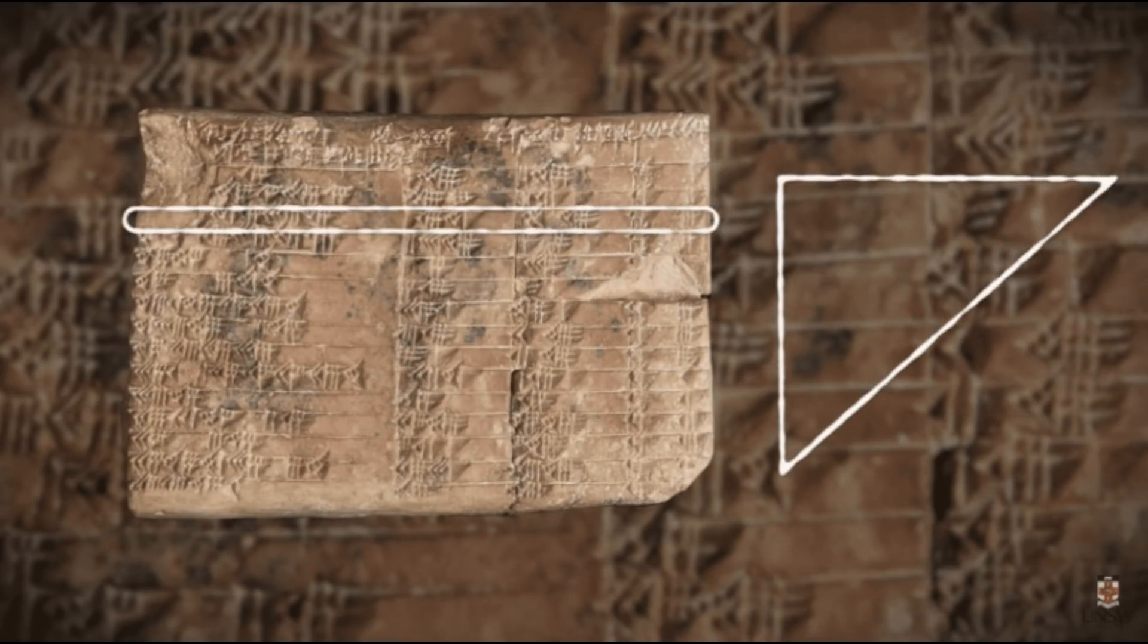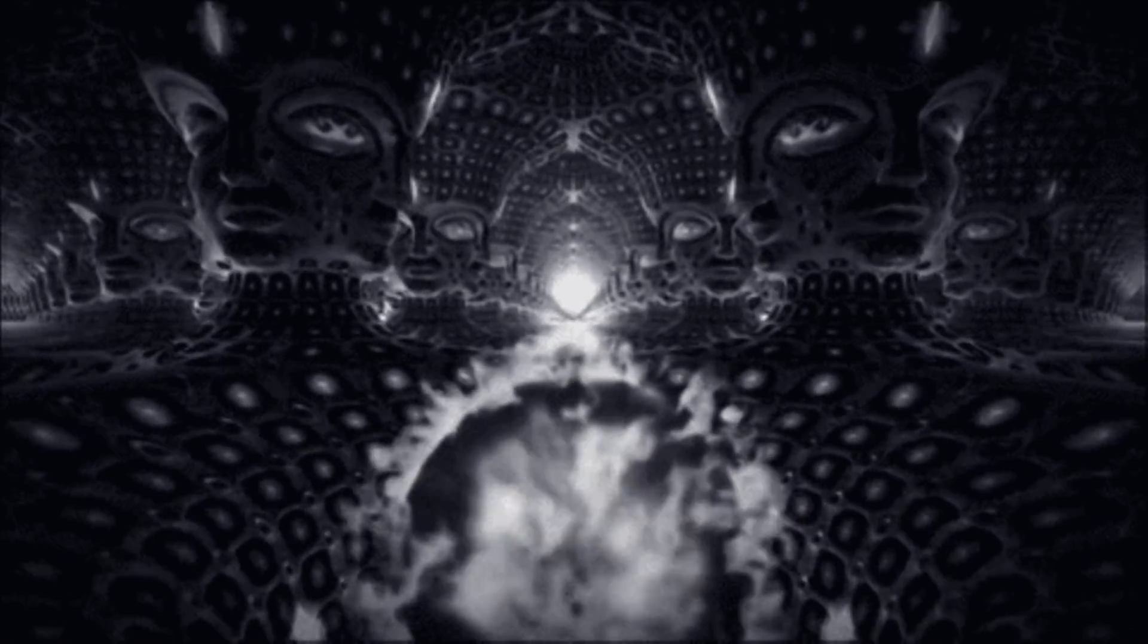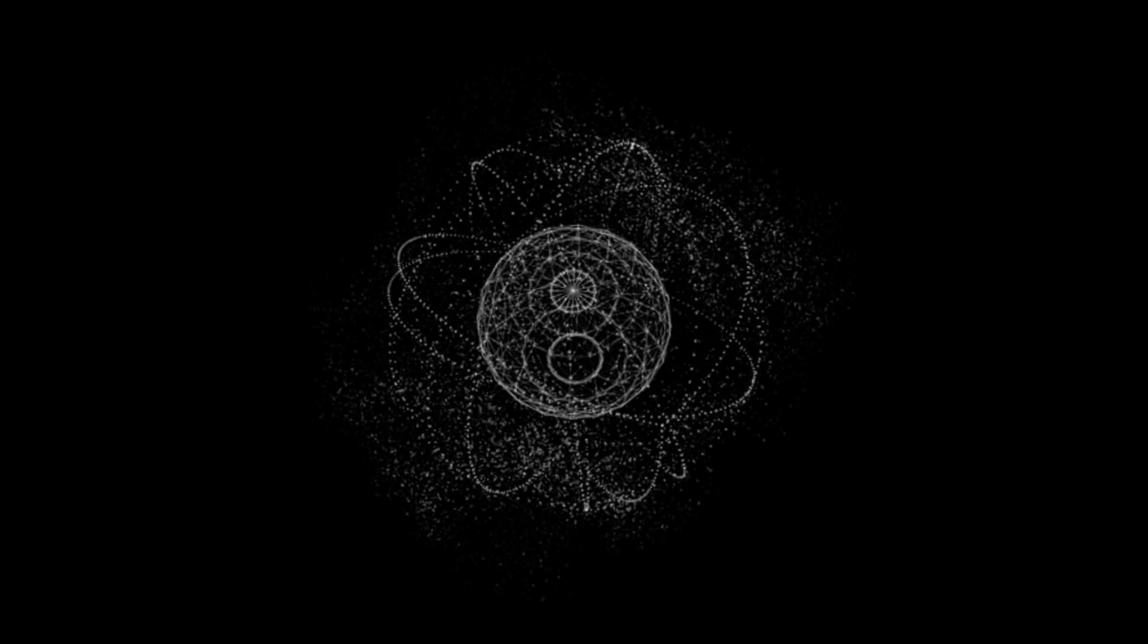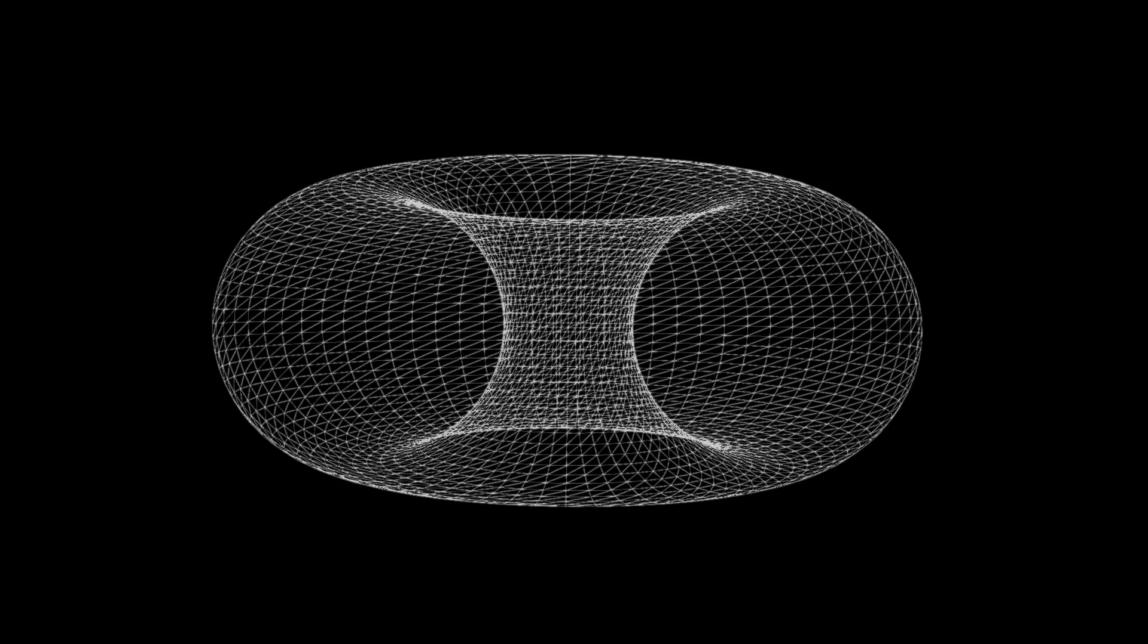This lost knowledge was known to our ancients and is now being uncovered for us today. Gradually you will come to see that numbers form a simple yet profoundly perfect three-dimensional matrix grid pattern that forms the shape of a torus.